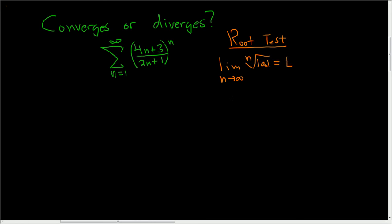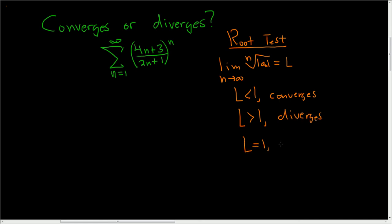then one of three things happens. If L is less than 1, then your series converges — it converges absolutely, but that's not relevant in this problem. If L is bigger than 1, then the series diverges. And if L is equal to 1, the test is inconclusive, so we have no information.